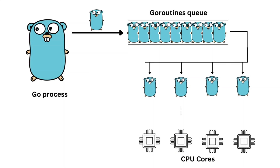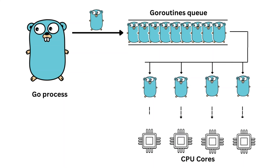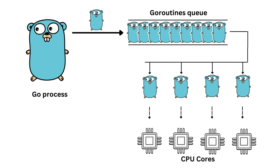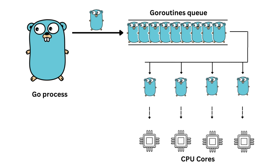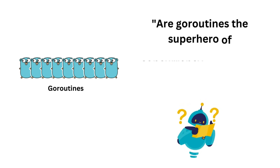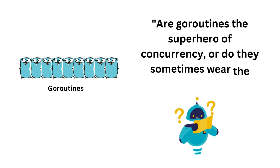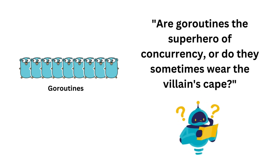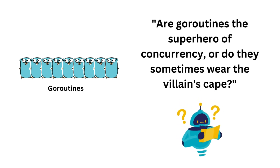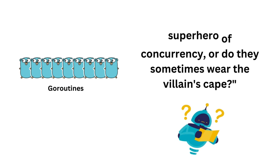GoRoutines are a fundamental concept in Go, providing a way to perform concurrent operations. They are lightweight and more efficient than traditional threads in terms of memory usage and start-up time. However, managing a large number of GoRoutines can be challenging.